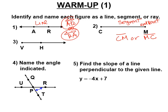You can call it line segment CM or line segment MC. The last thing is called a ray. Rays are the tricky one — the endpoint, the point on the end, has to go first. You cannot call this HV; it is ray VH. The endpoint goes first in a ray.